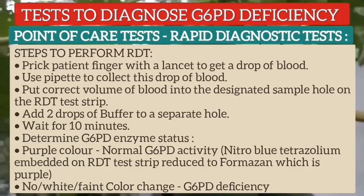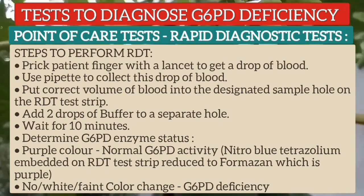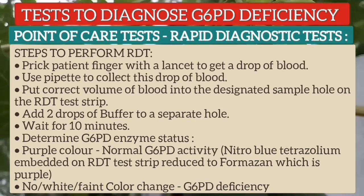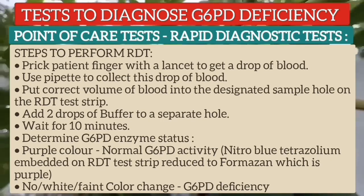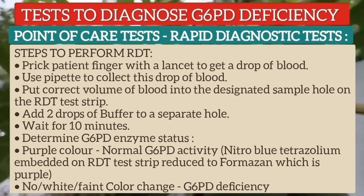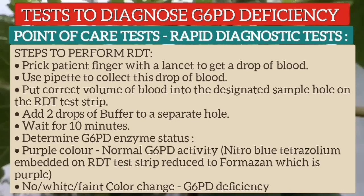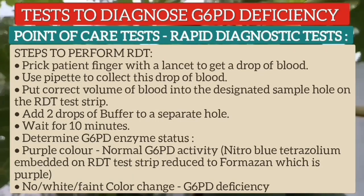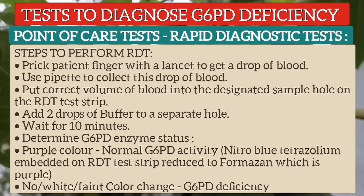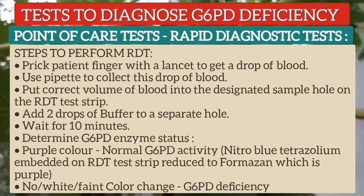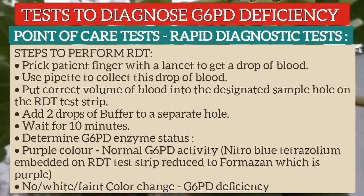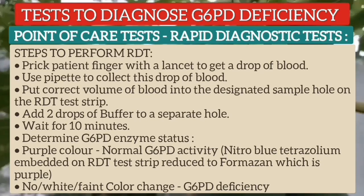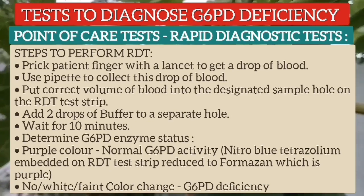Here are the steps to perform the rapid diagnostic test. First, flick the patient's finger with a lancet to get a drop of blood. Use a pipette to collect this drop of blood. Put the correct volume of blood into the designated sample hole on the test strip. Then add two drops of buffer to a separate hole. Wait for 10 minutes and determine G6PD enzyme status. If there is purple color, it indicates normal G6PD activity, because nitro blue tetrazolium embedded on the test strip is converted to formazan, which is purple. If there is no color or just a white or faint color change, this indicates G6PD deficiency.